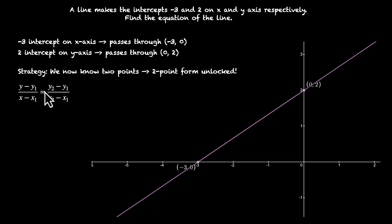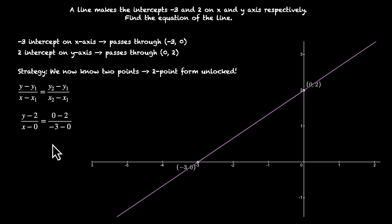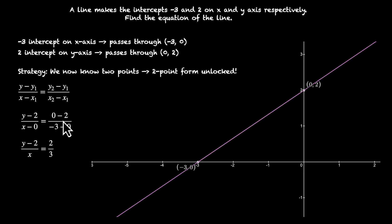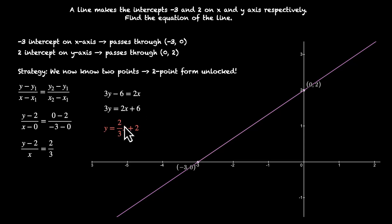Let's do this using the two point form: y minus y1 over x minus x1 equals y2 minus y1 over x2 minus x1. Taking 0 comma 2 as x1 y1, we get y minus 2 over x minus 0 equals 0 minus 2 over minus 3 minus 0. This becomes y minus 2 over x equals minus 2 over minus 3, the signs cancel giving 2 over 3. Cross multiplying: 3y minus 6 equals 2x, so 3y equals 2x plus 6, and dividing by 3 gives y equals 2 over 3 times x plus 2. This is the equation of the line with intercepts minus 3 and 2.